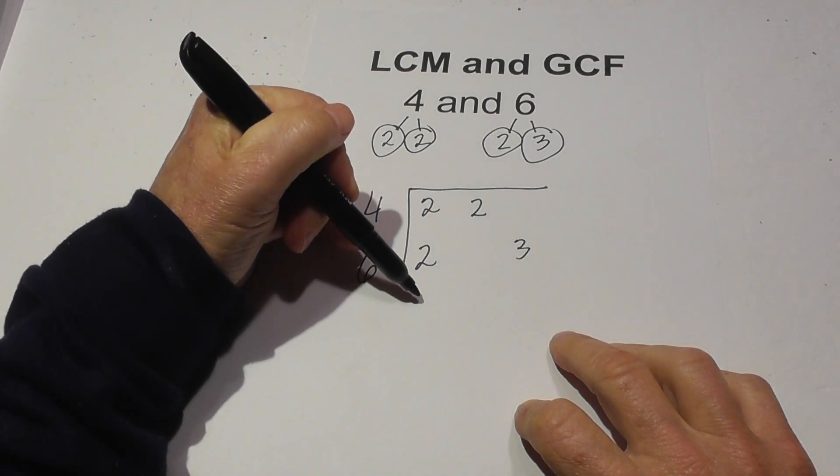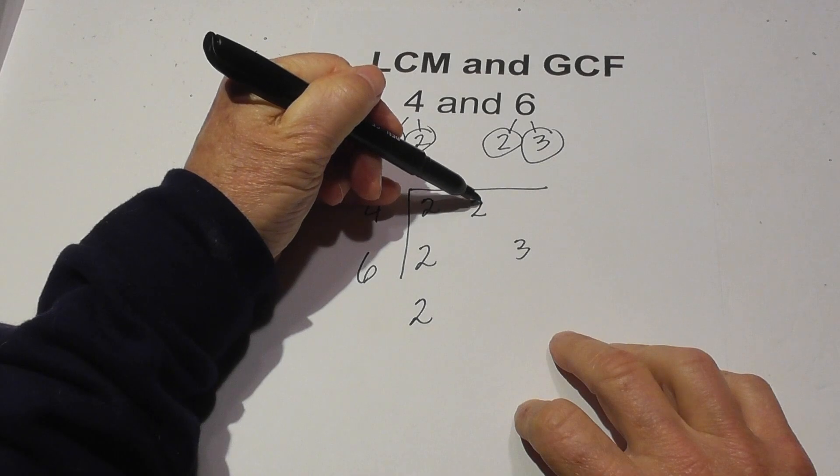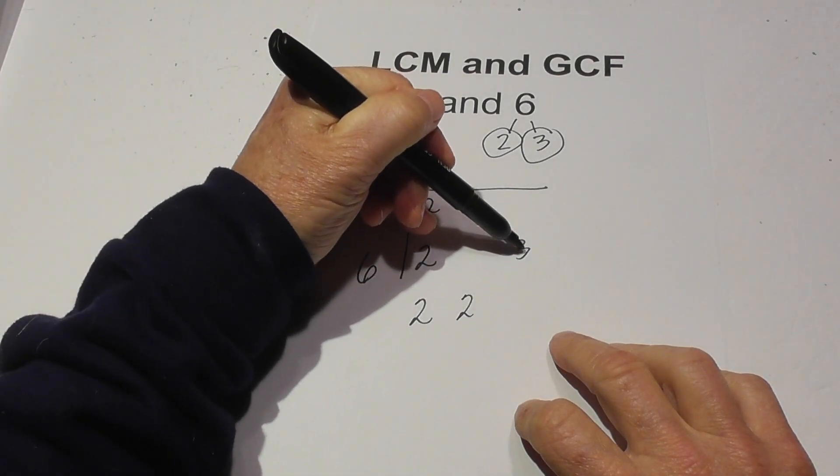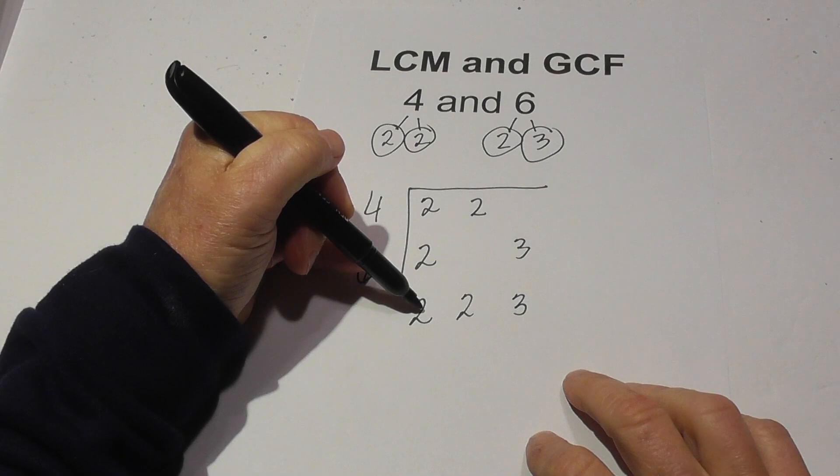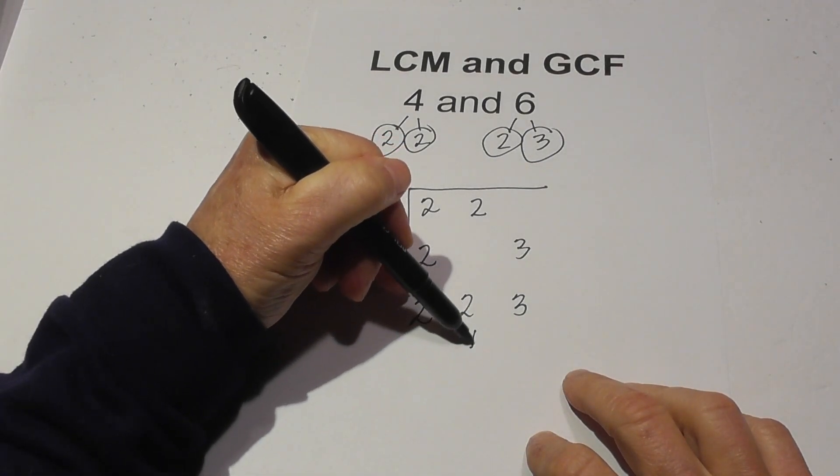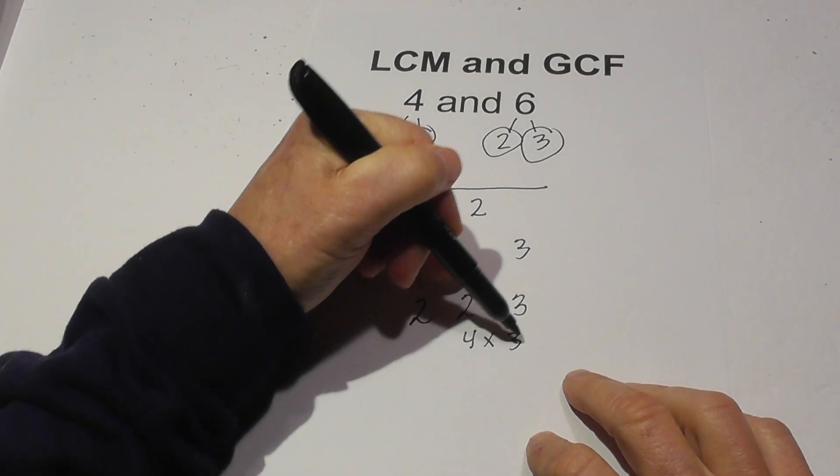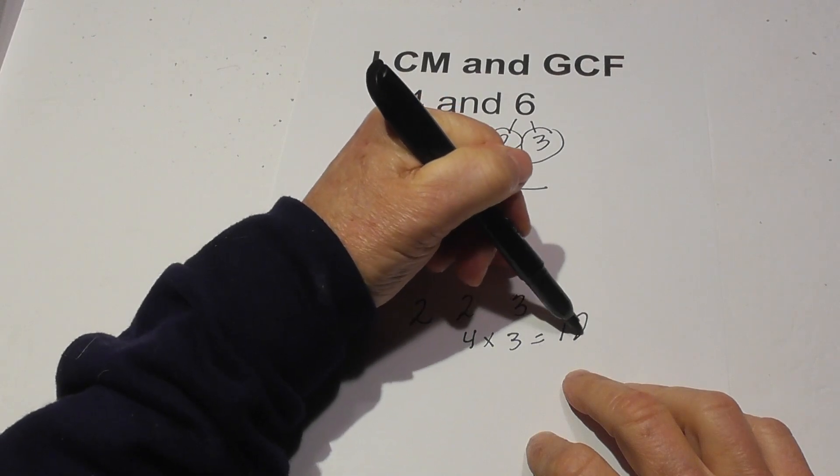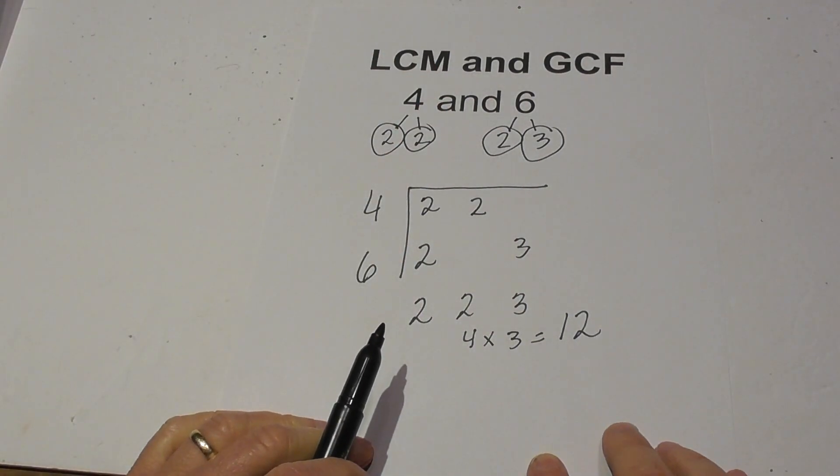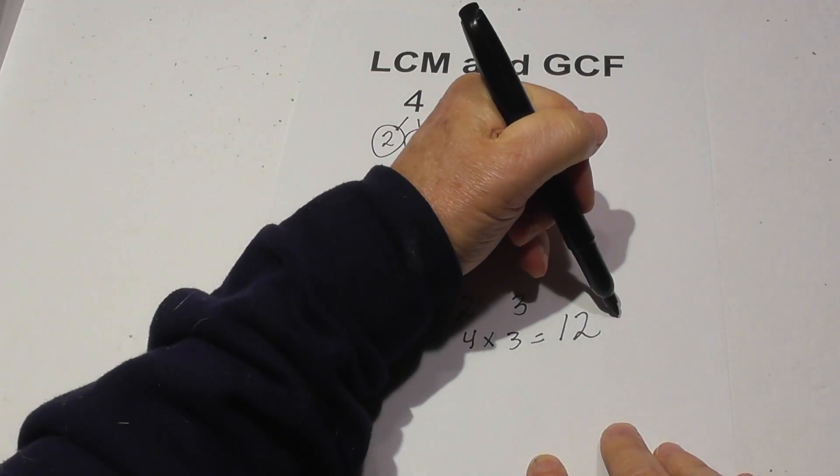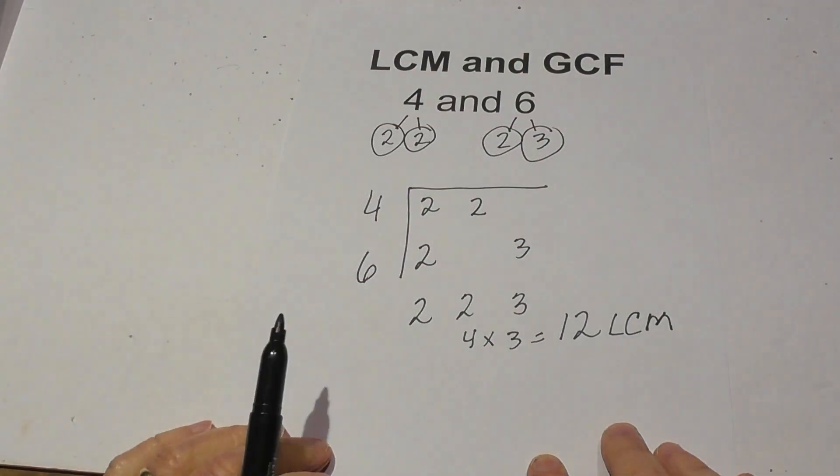So there's two twos here so I'll just bring down one two, bring down one two, bring down one three, multiply these together two times two is four and four times three equals 12. So the LCM of four and six equals 12.